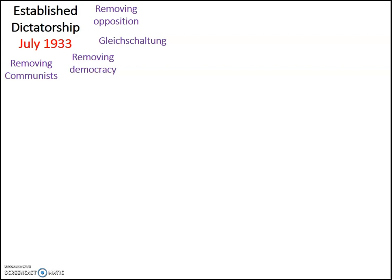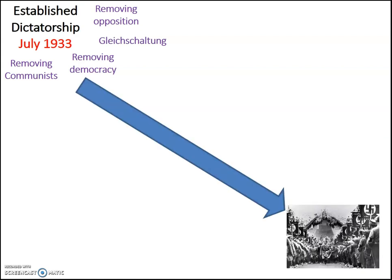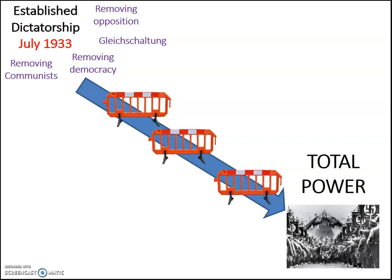Now he did have a dictatorship by July of 1933, but he did not have total power. Total power didn't really come to Hitler until August of 1934. In this picture you can see Hitler at the Nuremberg Rally in 1934 ascending the steps as a godlike figure. In order to get to that point, there were three barriers — three hurdles he had to get over in order to move from being a dictator in July of 1933 to total power in 1934.